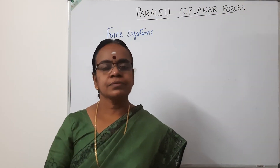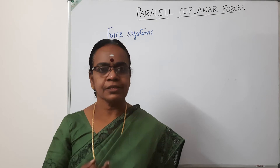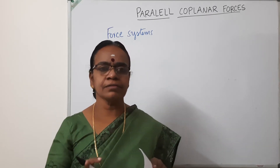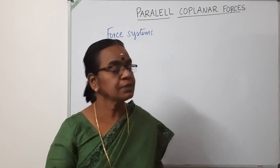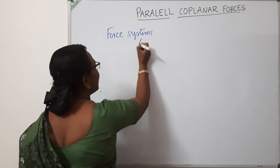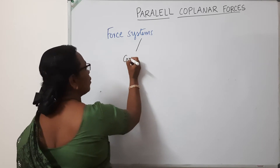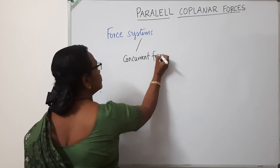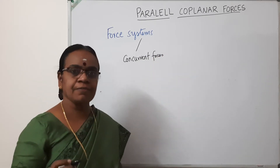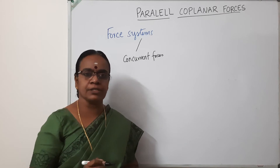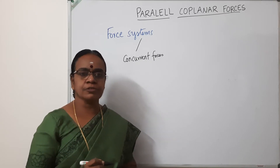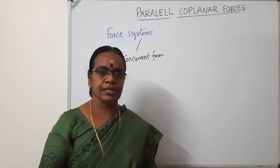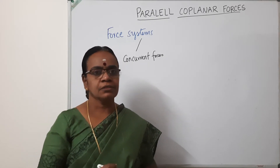Good morning. In the previous classes, we have discussed different types of force systems. When the forces are acting in the same plane, we call it a coplanar force system. In the coplanar force system, we have different categories. The first one we already discussed is concurrent forces. If all the forces have the line of action meeting at one point, then that system of forces is called concurrent forces, and we have learnt how to find out the resultant of a concurrent force system.